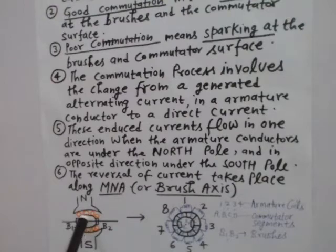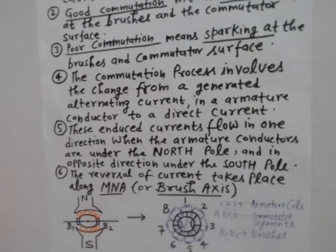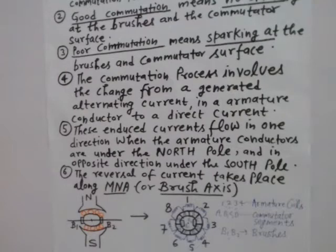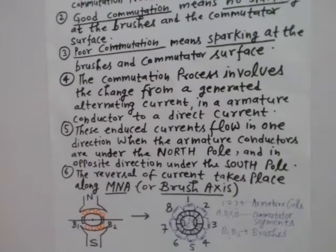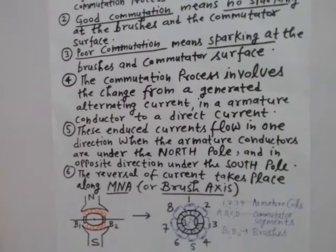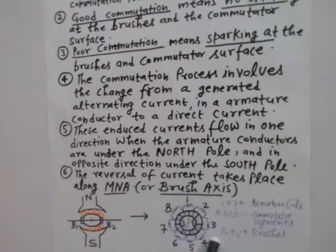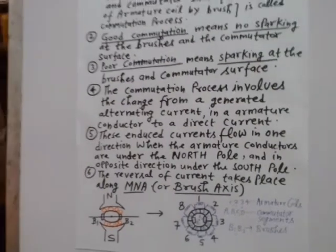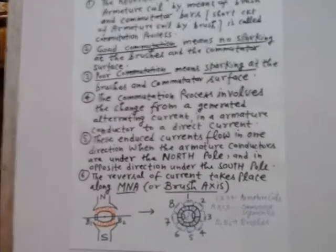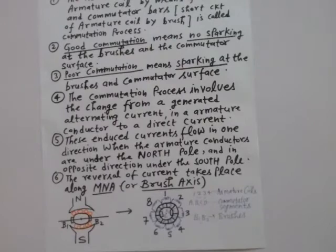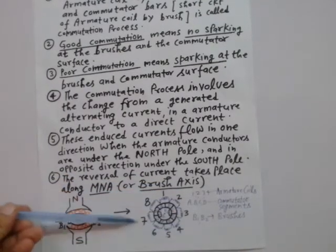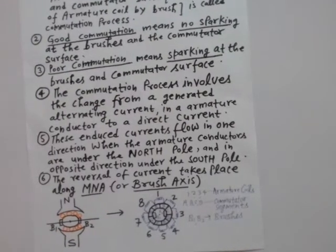The commutator is made with copper segments and is attached to the shaft. Its job is to convert the alternating voltage in the armature into a DC voltage. The segments labeled ABCD are the commutator segments, and the elements labeled 1 through 8 are the armature coils. B1 and B2 are the brushes.